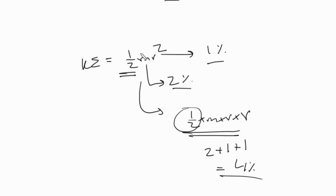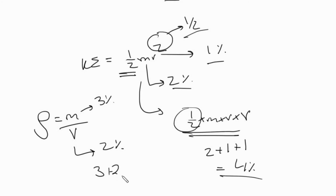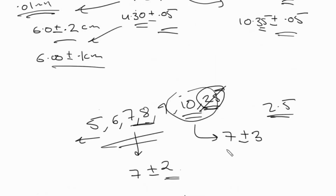Remember that coefficients and constants don't have uncertainties, and the other uncertainties depend on the power. So if it was a root instead of a square, you would divide by 2 rather than adding it twice. Uncertainties are never subtracted - even for division. For example, density = mass/volume: if mass has 3% uncertainty and volume has 2% uncertainty, it is not 3 minus 2. It's 3 plus 2, because uncertainties always add up. So the density has an uncertainty of 5%.